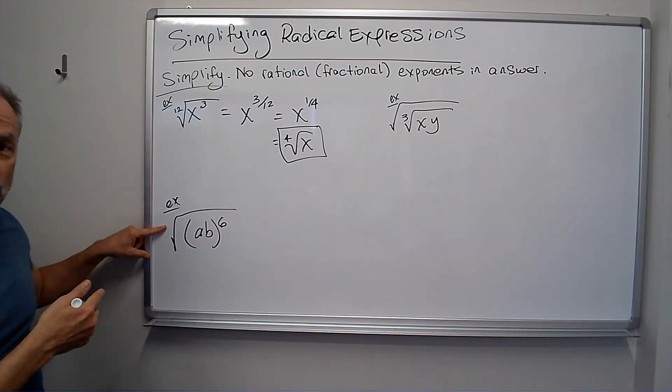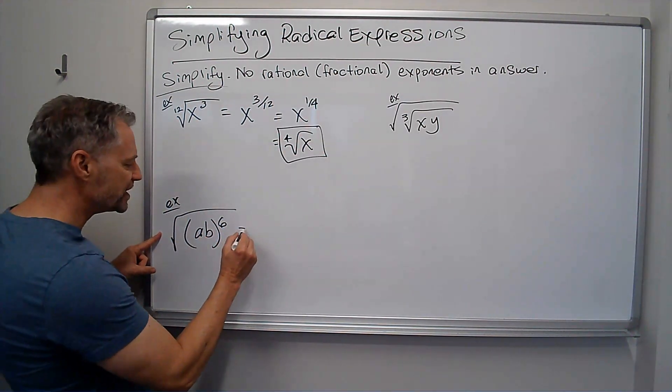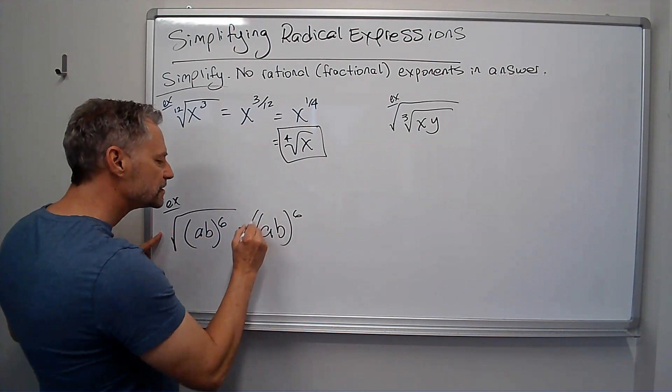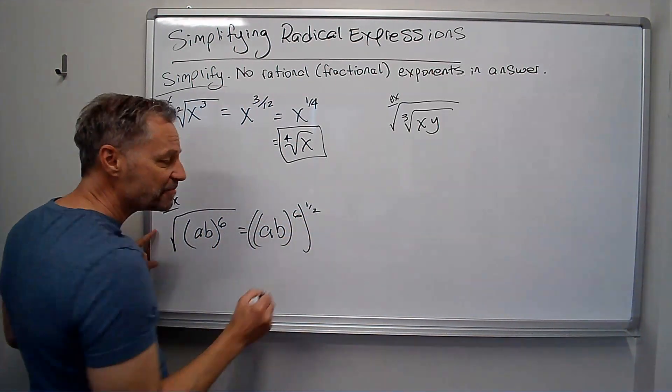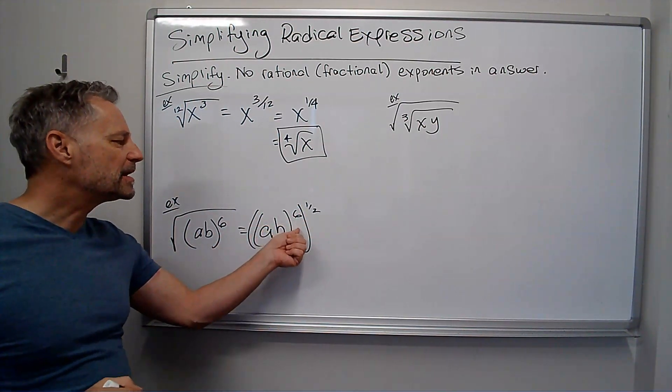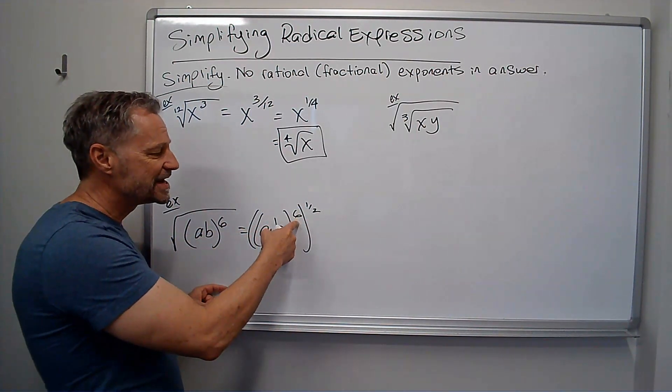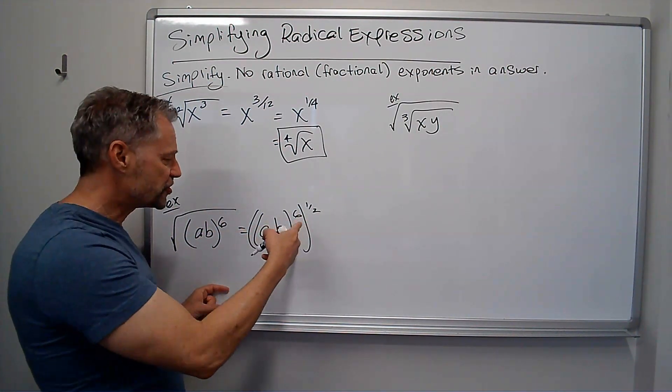Well, remember the square root means the one-half power. So this whole thing is really ab to the sixth, and then if we want to say to the one-half power. But remember, a power to a power, we multiply the exponents. So we're just going to multiply these together. Six times a half is just three.